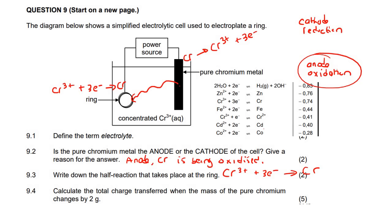Then it says calculate the total charge transferred when the mass of the pure chromium changes by 2 grams. Now this is interesting because the CAPS curriculum never used to really include these questions.